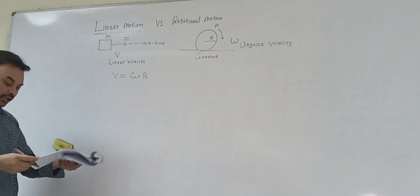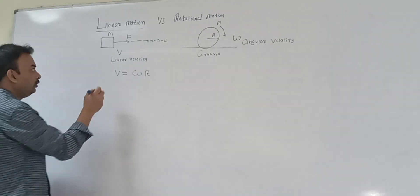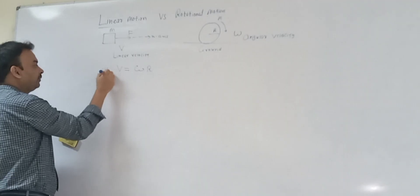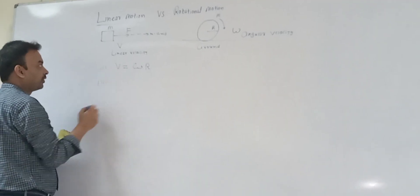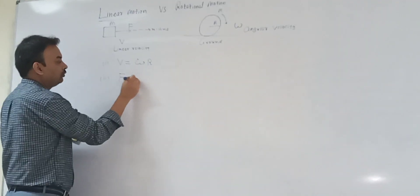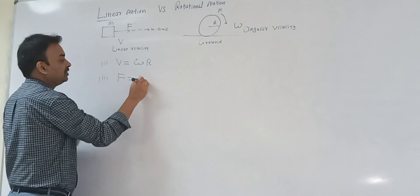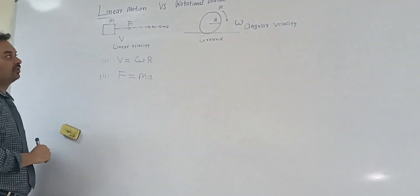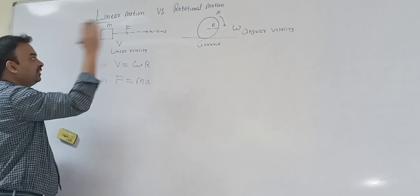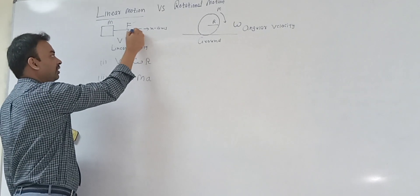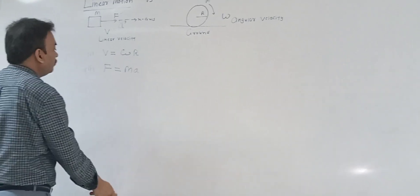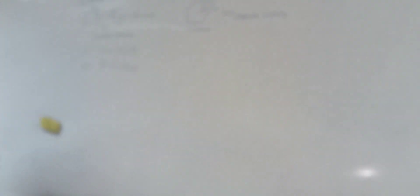The second formula: when we apply a force f on mass m, force is equal to mass times linear acceleration a. So f equals m times a — the mass is accelerating with acceleration a.